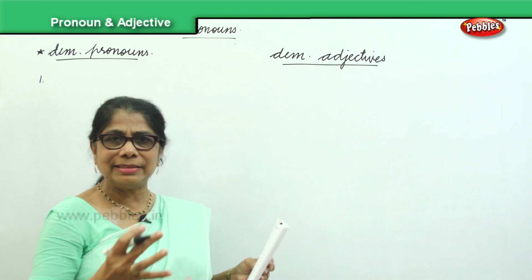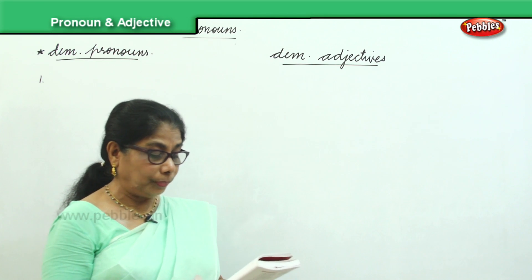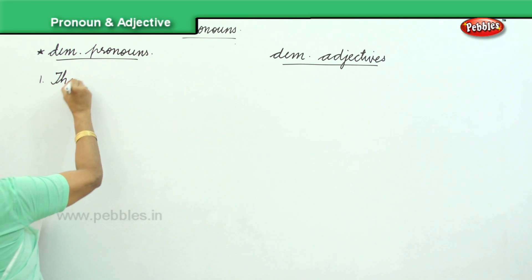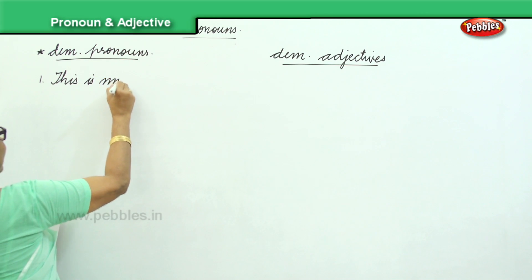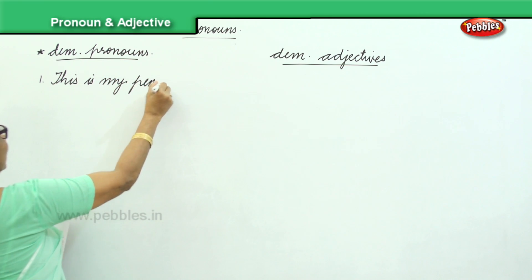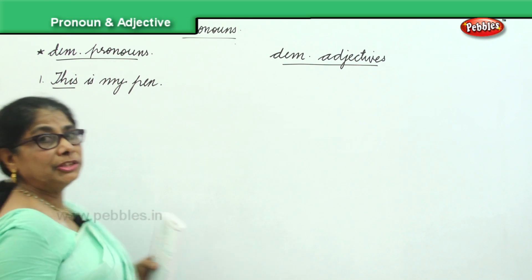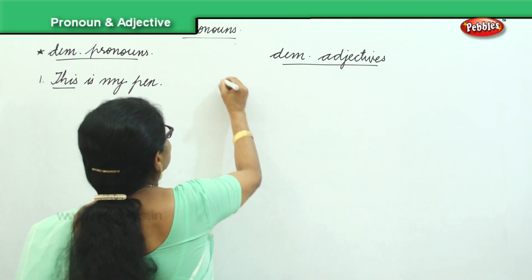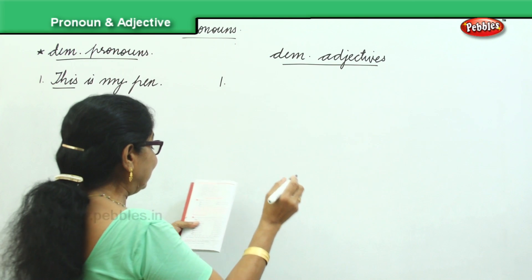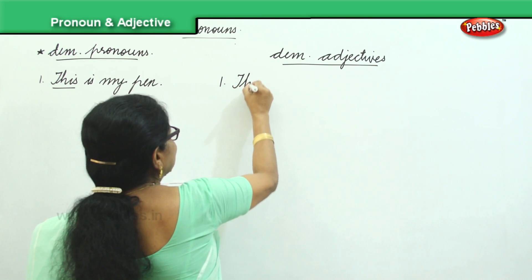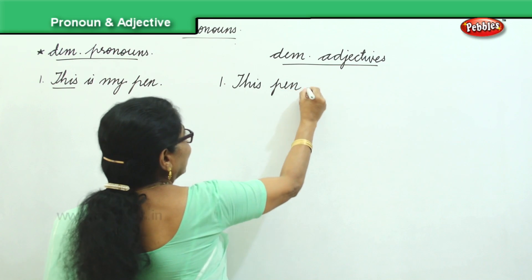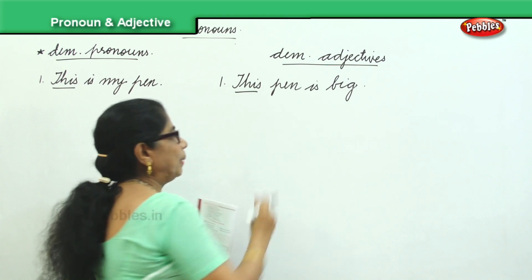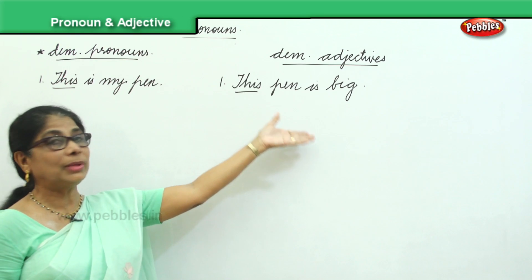We will look at two sets of sentences and try to understand. When you say 'This is my pen,' that is a demonstrative pronoun. Now in a demonstrative adjective, it will be 'This pen is big.' In both we are talking about this pen, but here pen is big, so that goes under adjective.